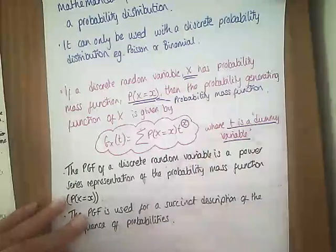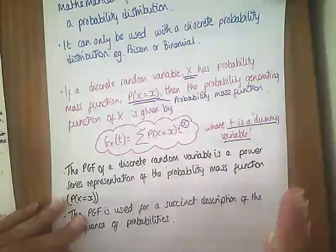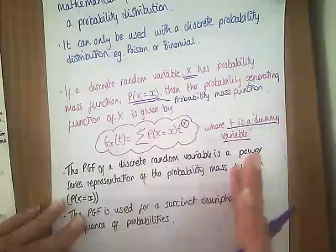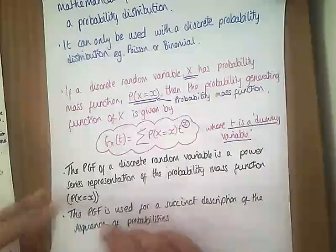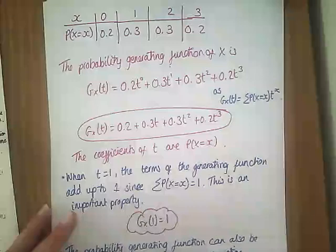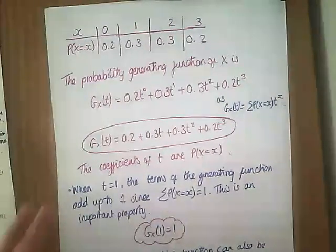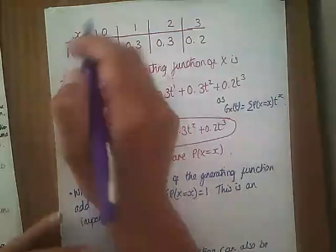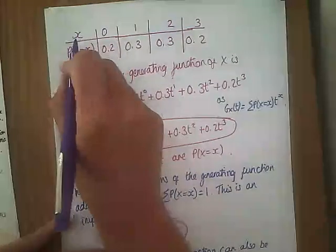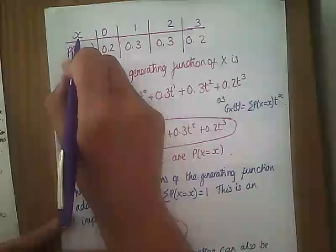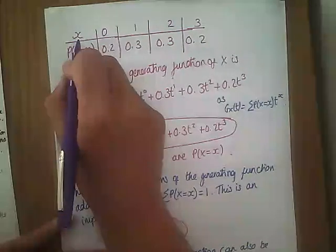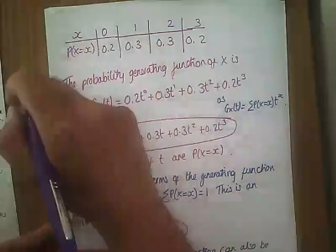If all the things I've just said mean nothing to you, don't panic because we're going to do some examples and it'll become much clearer. So let's say I had a variable X — it could be, say, the number of sixes I get when I roll a dice.